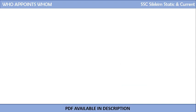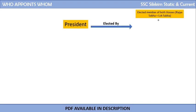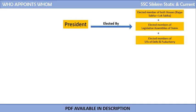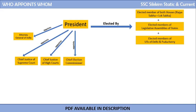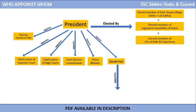In a nutshell: the President is elected by elected members of both houses of Rajya Sabha and Lok Sabha, elected members of Legislative Assemblies of the states, and elected members of Legislative Assemblies of the Union Territories of Delhi and Pondicherry. The President appoints the Attorney General of India, the Chief Justice of the Supreme Court, the Chief Justices of state High Courts, the Chief Election Commissioner, the Prime Minister, and the Governor. And in the end, it is the Governor who appoints the Chief Minister. This is the hierarchy of appointments — who appoints whom.